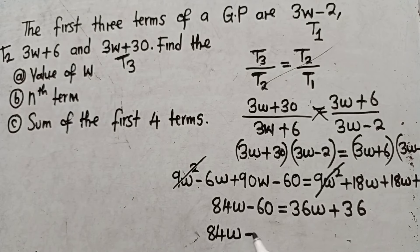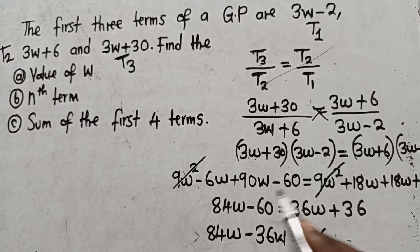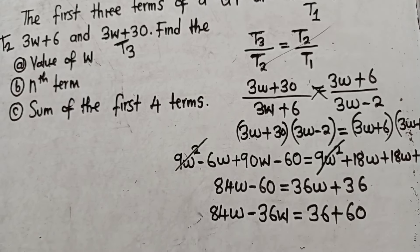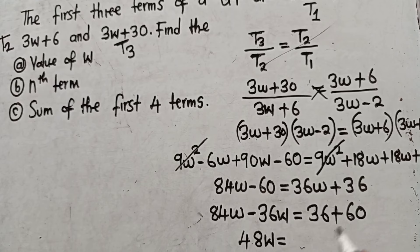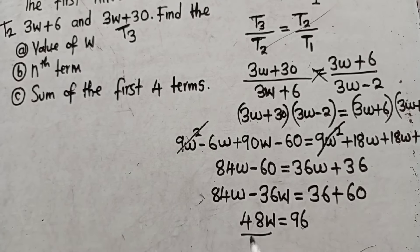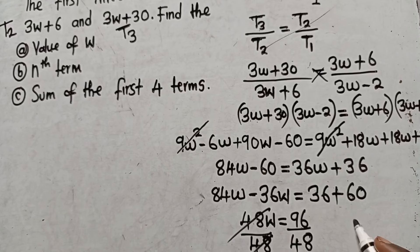Grouping like terms: 84w minus 36w equals 48w on the left, and 36 plus 60 equals 96 on the right. So we have 48w equals 96. Dividing both sides by 48, we get w equals 96 divided by 48, which equals 2.